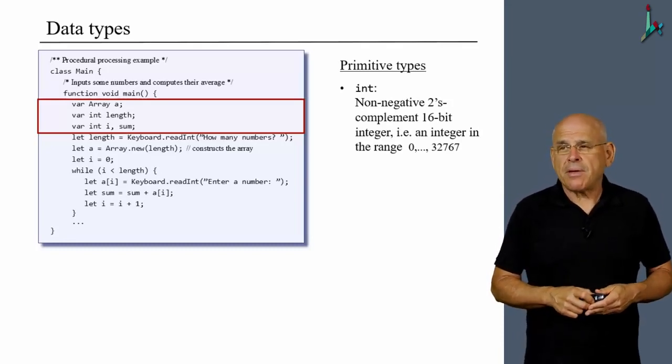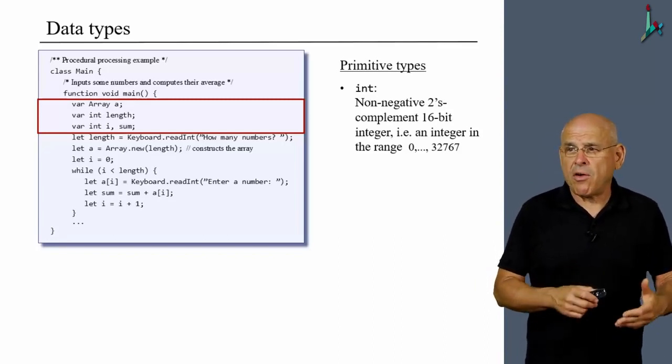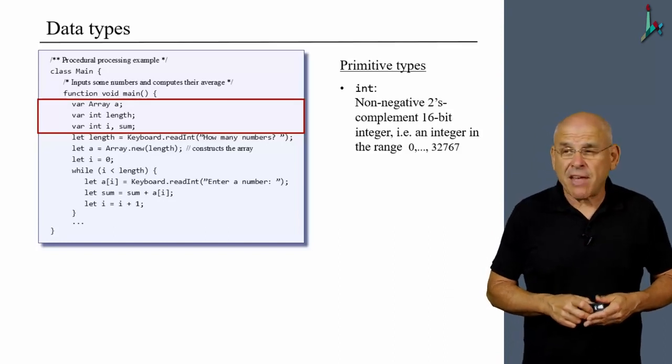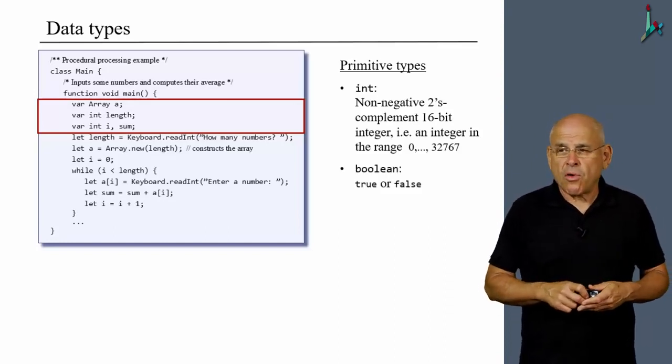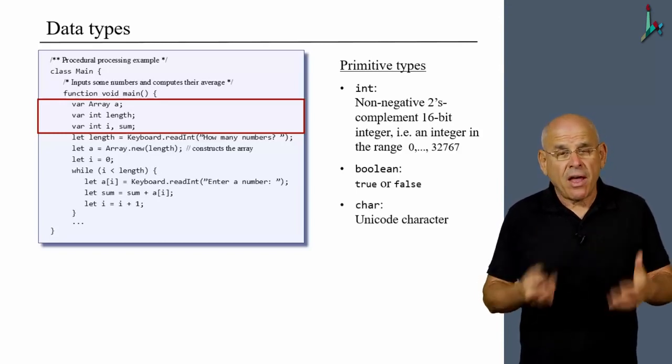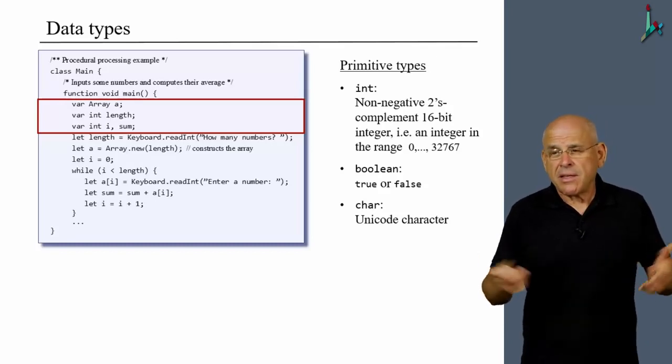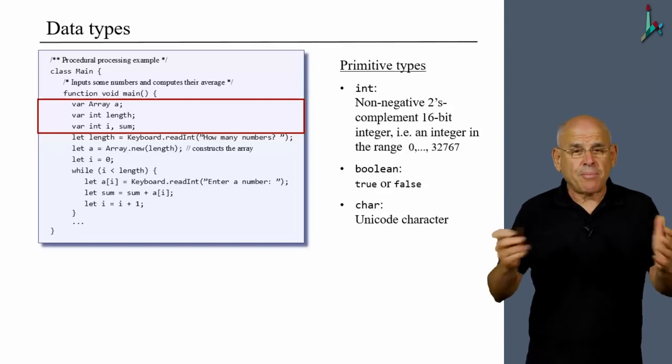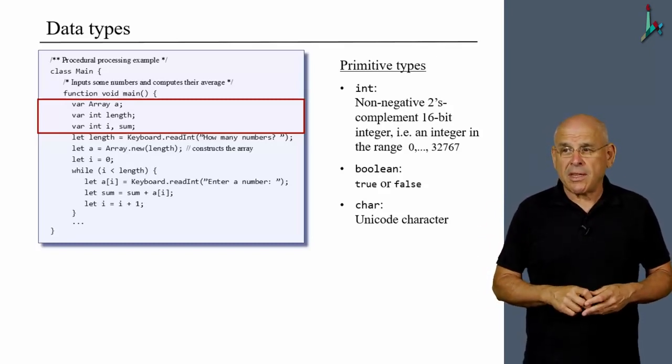The int data type can hold values in the range of 0 to 32,767. Then we have Boolean types, which are either true or false. And we have char types, which are essentially numbers that represent characters using the Unicode character scheme, or the ASCII scheme, which happens to be the same in the subset of characters that we use in this course.